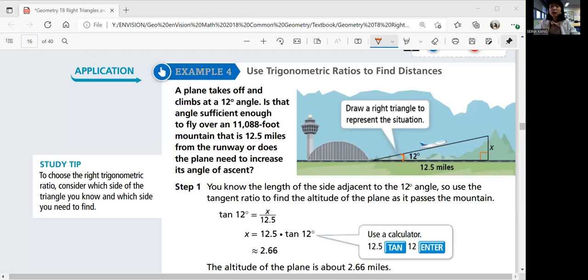So what do we need to check here? After we get x, what do we do? We need to see if x is smaller or greater, greater than 11,088 foot mountain. Because if it's smaller than 11,088 foot, you can't go over the mountain, right? So we need to see if x is greater than 11,088 foot.